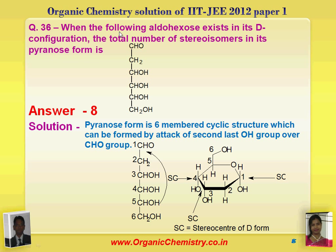Integer type question: when the forming aldehyde hexose exists in its D-configuration, the total number of stereoisomers in its pyranose form is? Pyranose form is the six-membered cyclic structure formed by attack of the C5-OH group over the CHO group. In D-configuration, this particular OH group must be on the right-hand side. Stereochemistry is observed over positions 1, 3, and 4. As the molecule has three stereocenters, total number of isomers is 2³ = 8.